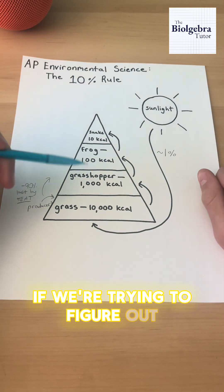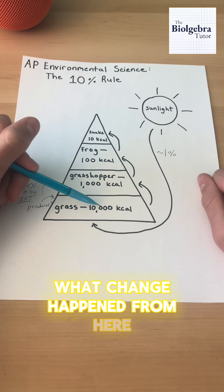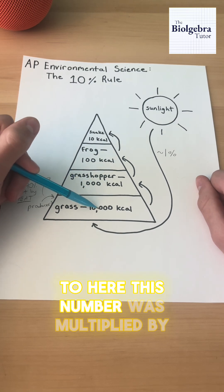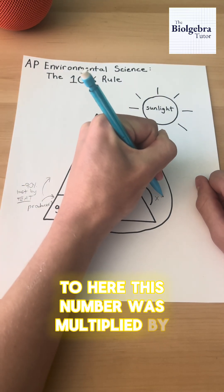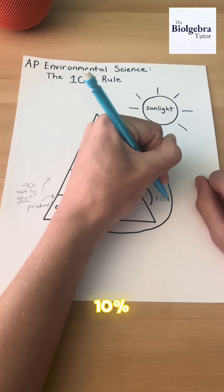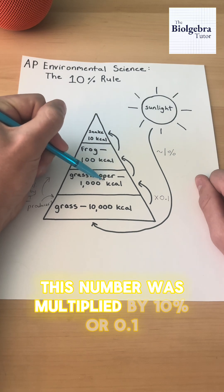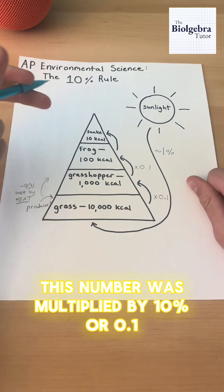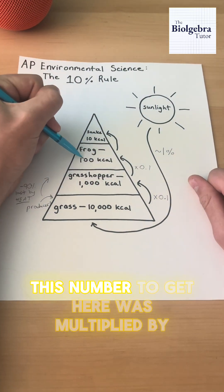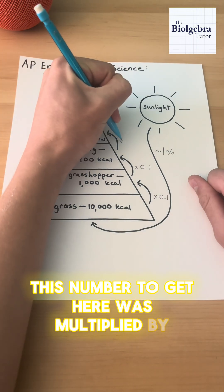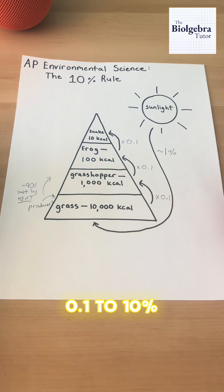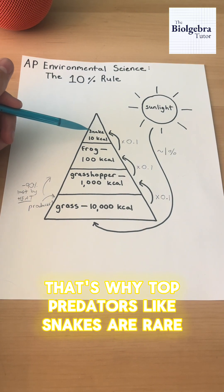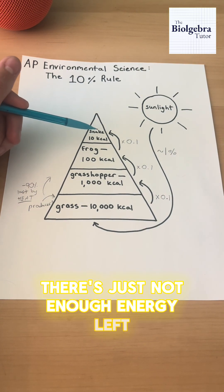So if we're figuring out what change happened from one level to the next, each number is multiplied by 10%, or 0.1. That's why top predators like snakes are rare — there's just not enough energy left.